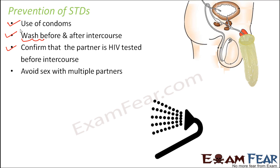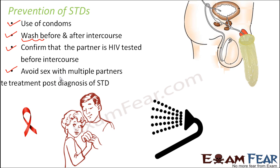Avoid intercourse with multiple partners. When somebody has intercourse with multiple partners, their chances of getting infected are more, because when you are in sexual contact with, say, 10 people, you don't know the medical history of all 10. But if you are with only one person, you can at least know the medical history of that single person and your body gets adjusted with that one person. So intercourse with multiple partners should always be avoided.